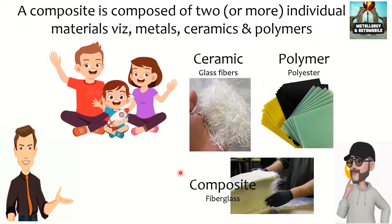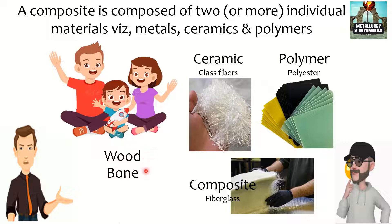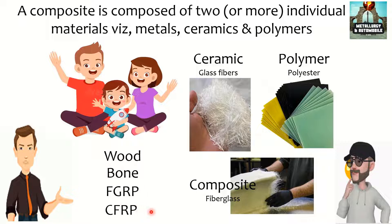Let us see some basic examples of composites. Wood and bone are some basic examples of natural composites. And synthetic composites are fiberglass reinforced polymers and carbon fiber reinforced polymers.